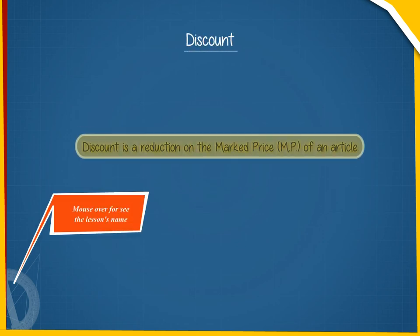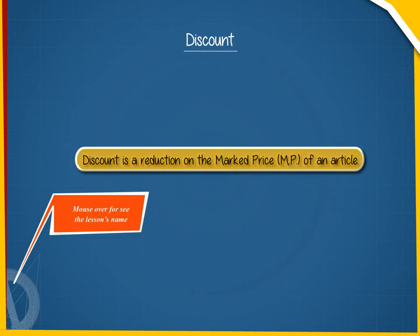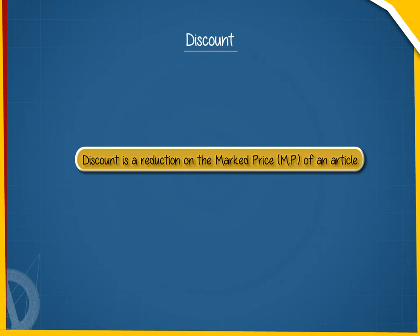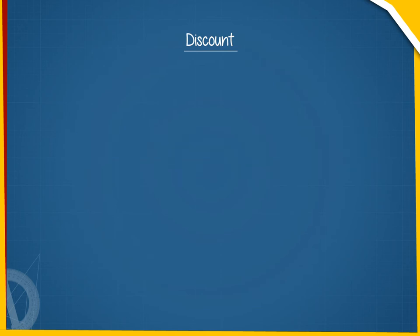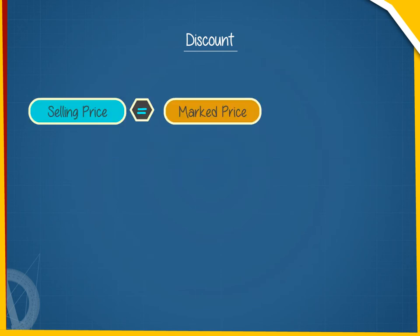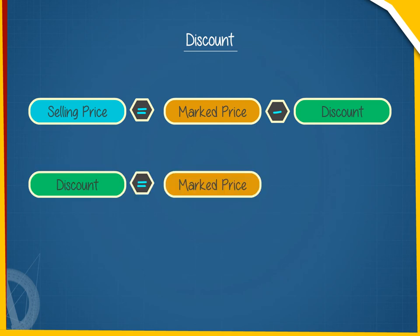Discount is a reduction on the marked price of an article. Selling price equals marked price minus discount. Discount equals marked price minus selling price. Discount is always calculated on marked price.